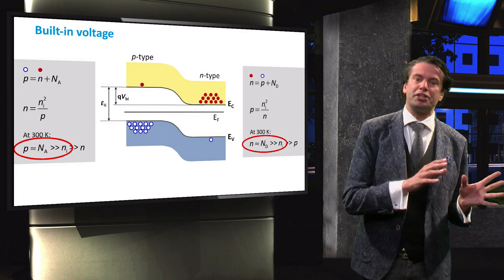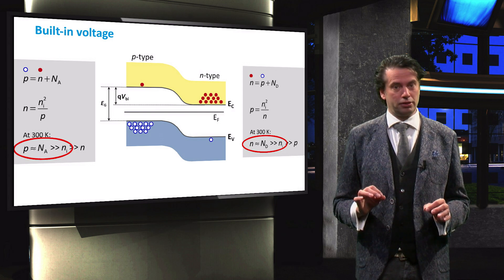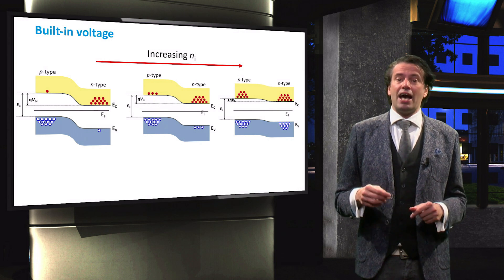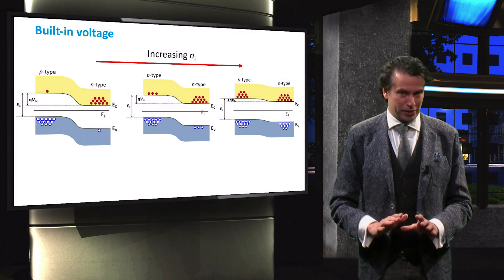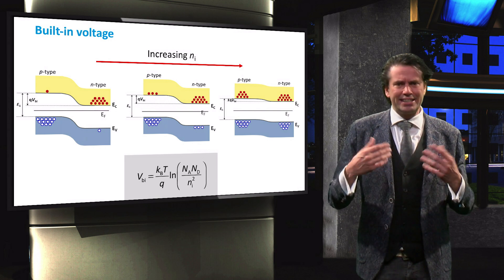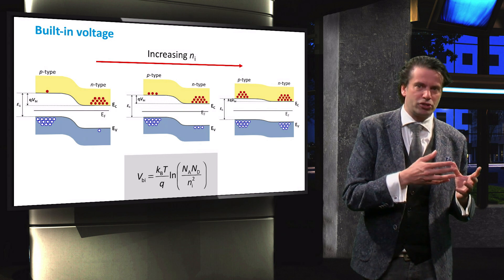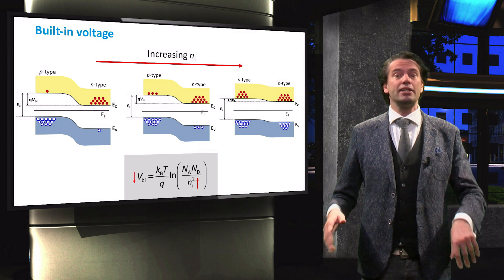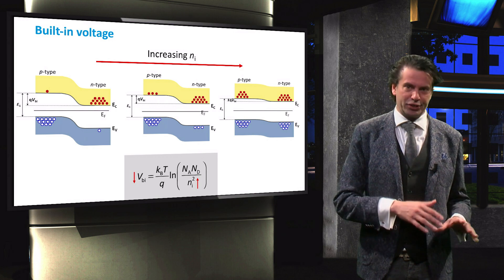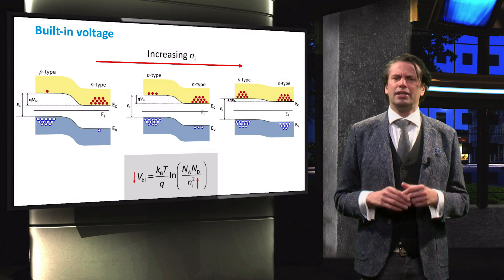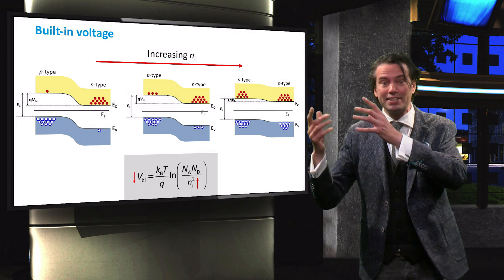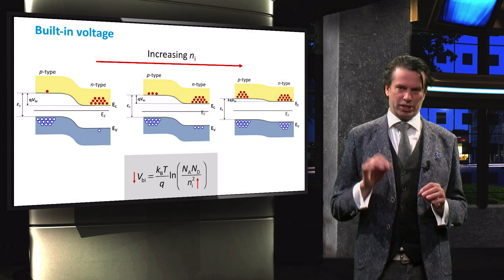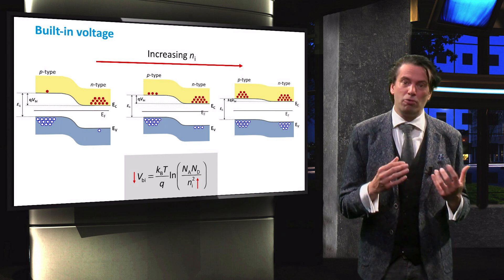This is not true for the minority charge carrier concentration, which will increase significantly. The difference between majority and minority charge carriers in the dopant material therefore decreases. As a result, the difference between the p- and n-type material becomes smaller with increasing temperature, and the potential difference in the p-n junction decreases. This relation is shown here, where the built-in voltage is a function of the product of the dopant concentration divided by the intrinsic carrier concentration squared. Therefore, if the intrinsic carrier concentration increases with increasing temperature, the built-in voltage will decrease. If the temperature becomes very high, the intrinsic carrier concentration could theoretically become greater than the dopant concentration, making the p-type and n-type materials almost intrinsic and resulting in a tiny built-in potential. In reality, the solar cell will break down before such temperatures are reached.